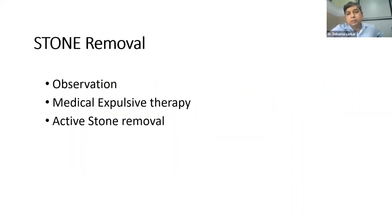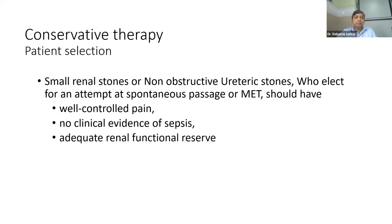Now the question comes regarding stone removal. The options are observation for a very selective group of patients, medical expulsive therapy (MET), and active stone removal. How do you decide who can be treated conservatively? If a patient has a small non-obstructive renal stone, with well-controlled pain on analgesics alone, no clinical evidence of sepsis, and normal functional reserve on biochemical evaluation — these patients can be put on conservative therapy. If any of these criteria are not met, you have to treat the patient.